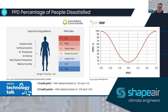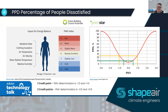What we're aiming for is to have everybody in the neutral zone. For one Green Star credit point you need to be between minus one and plus one, which means the percentage of dissatisfied people needs to be below 25%. For two credit points — between minus 0.5 and plus 0.5 — you need below 10% dissatisfied. Going further, you can achieve around 5% dissatisfaction in the neutral zone.